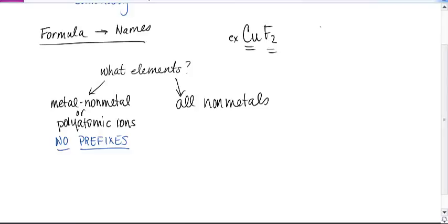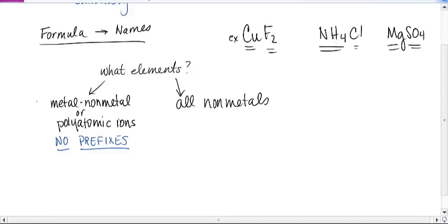Another example might be NH4Cl, polyatomic ion and a non-metal. Or something like MgSO4, metal, polyatomic ion. Those would all fall under this first category here. So none of them are going to get any prefixes.